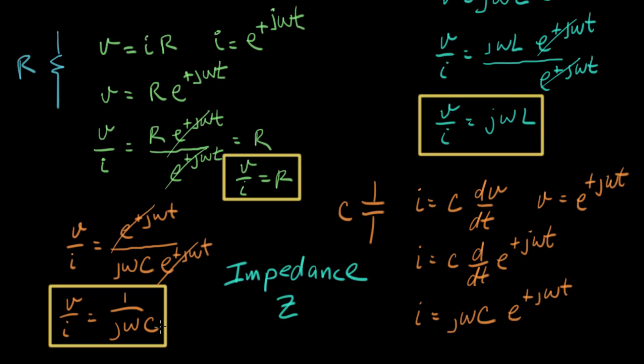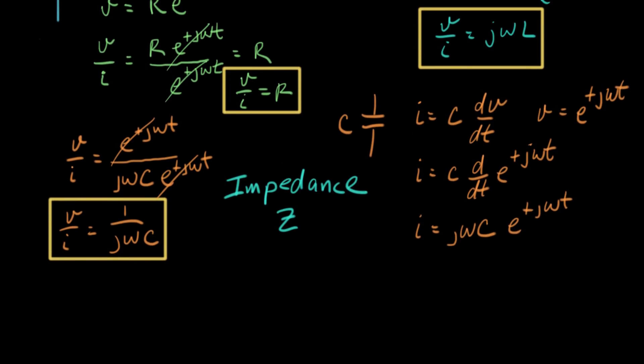And the idea includes both the values of the components and the effect that frequency has on the voltage to current ratio. So both of those things are combined into one idea. So just a quick summary of impedance: the impedance of a resistor equals R, impedance of an inductor equals j omega L, and the impedance of a capacitor equals one over j omega C.